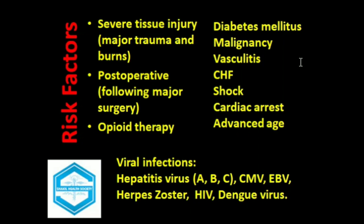Additional risk factors include cardiac heart failure, shock, cardiac arrest, and advanced age. Viral infections such as Hepatitis A, Hepatitis B, Hepatitis C, cytomegalovirus, Epstein-Barr virus, Herpes zoster, HIV, and dengue virus are also considered risk factors for acalculous cholecystitis.